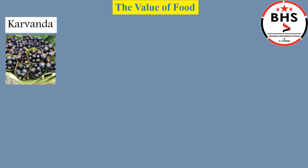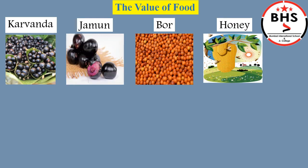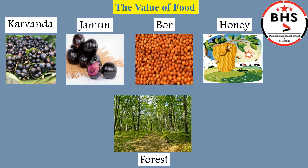Karwanda, jamun, bor, honey — we get all these mainly from the forest. There are people who go to the forest and gather all these and then sell them. There are also people who grow them in their garden or farm.